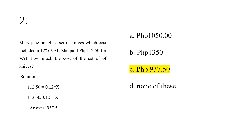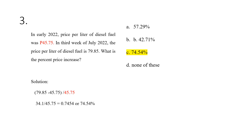For number two, a set of knives has a VAT of 12% equal to ₱112.50. To find the cost of the set of knives, we set up the equation: 112.50 is equivalent to 12% (0.12) of x. Moving 0.12 to the left-hand side, the final value of the set of knives will be 112.50 divided by 0.12, which equals ₱937.50.